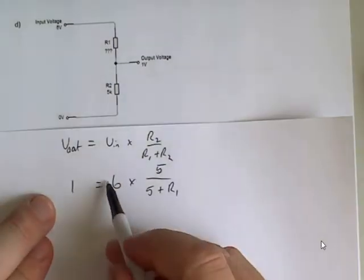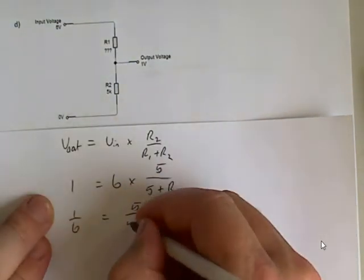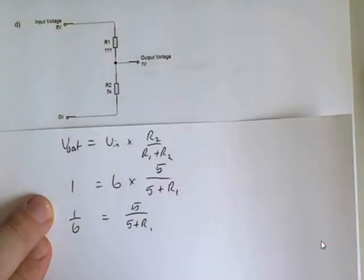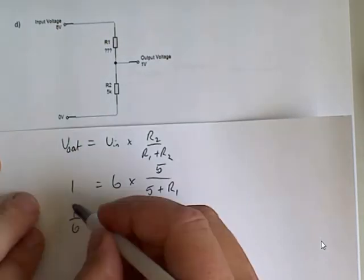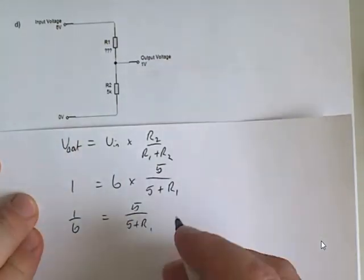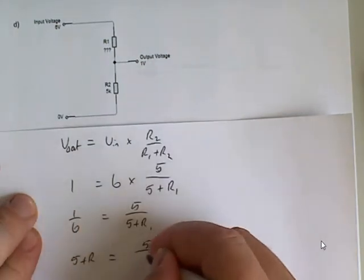Divide both sides by 6. So 1 over 6 equals 5 over 5 plus R1. Now I can take this whole thing and put it on the bottom and swap it with this whole thing. So I can say that 5 plus R equals 5 over 6.